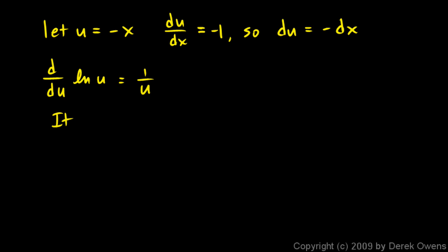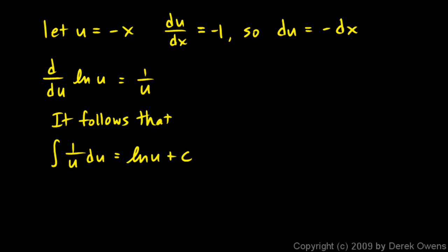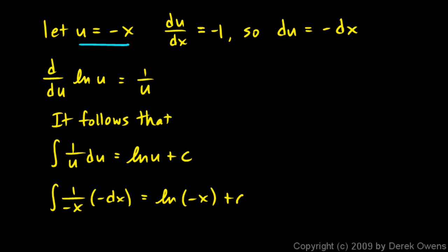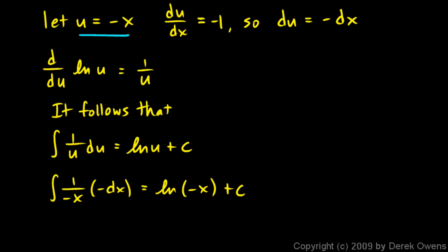So from this, it follows that the integral of 1 over u du is equal to the natural log of u plus c. Now let's substitute back in — taking the fact that u equals negative x. So we have the integral of 1 over negative x, and du is negative dx. This is going to equal the natural log of negative x plus c. And these negative signs right down here obviously can cancel out, and we're left with: the integral of 1 over x dx is equal to the natural log of negative x plus c.